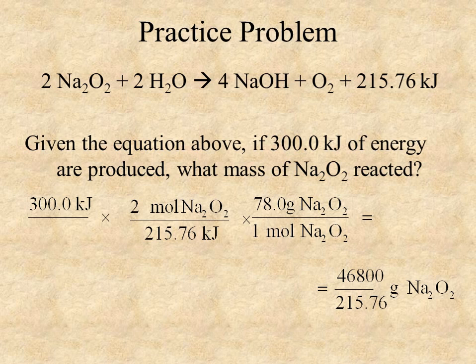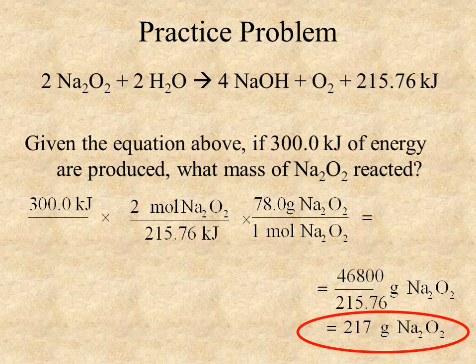And simplifying, we should find that we would get 217 grams of Na2O2 that would need to be reacted in order to achieve 300 kilojoules of energy.